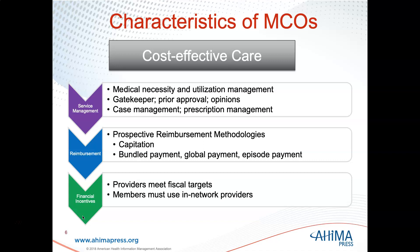In terms of reimbursement, they use prospective payment systems, capitation — make sure you know what capitation means — bundled payments, global payments, and episode payments. For financial incentives, providers are required to meet fiscal targets in order to get a financial bonus, and members are incentivized to use in-network providers for lower costs. Most in-network providers have been contracted to provide services at a lower cost.